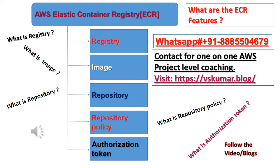What are the components of Amazon ECR? 7. Amazon ECR contains the following components: 8. Registry, Image, Repository, Repository Policy, and Authorization Token.